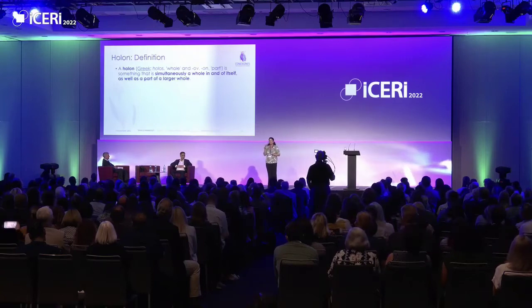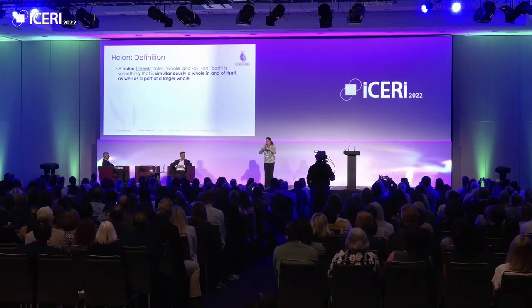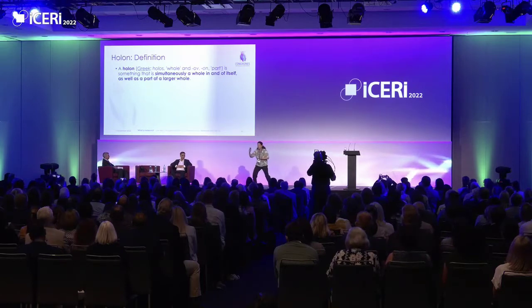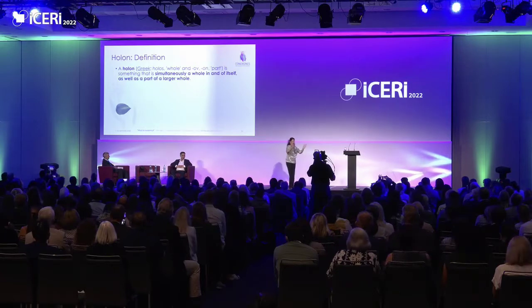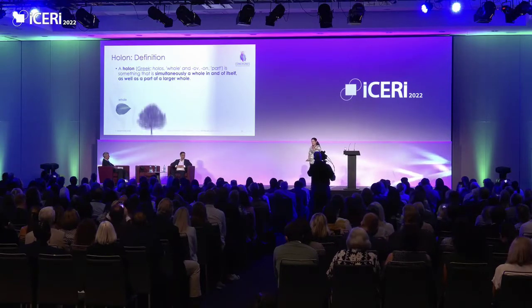A holon is something that is at once a part and a whole. So a leaf is a thing — it's a whole thing — but it could also be part of a tree. A piece of lettuce could be a whole thing, but it could also be in your salad.